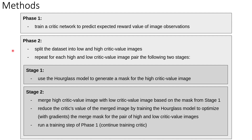Our approach consists of two training phases. In phase 1 we train a critic network to predict the expected reward value of image observations. In phase 2 we split the dataset into low and high critic value images — this can be an Imitation Learning dataset or a Reinforcement Learning Replay buffer. We sample a pair of high and low value images, and for each pair we repeat the following two stages.